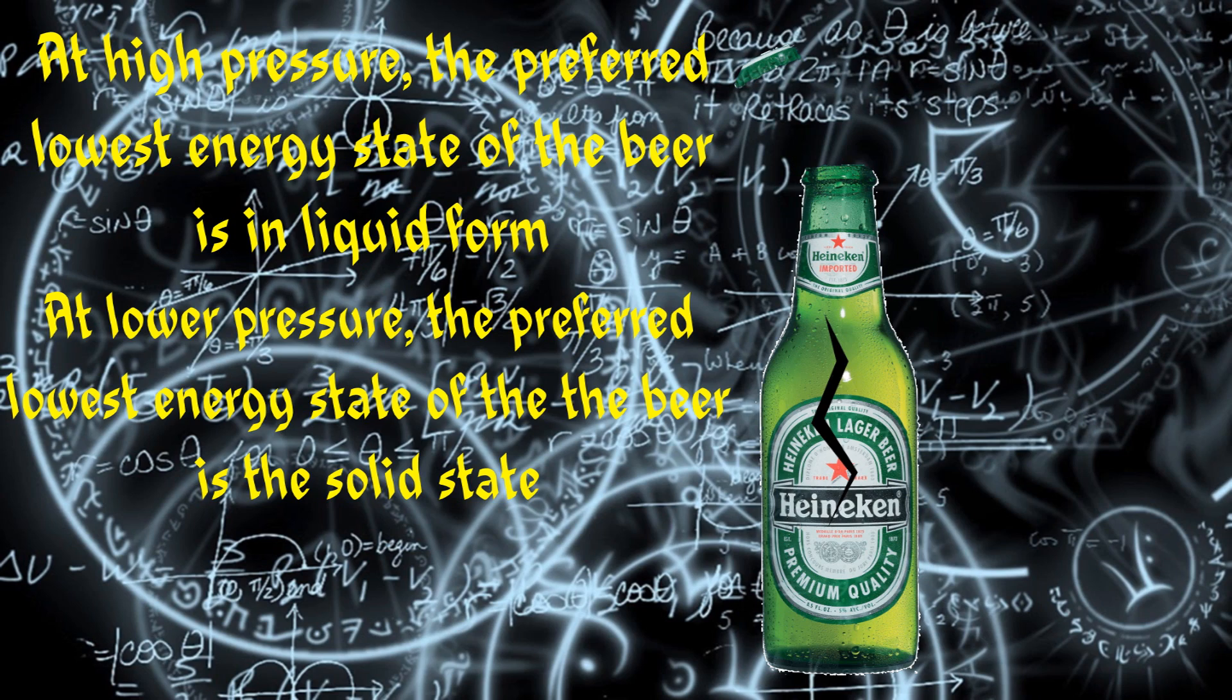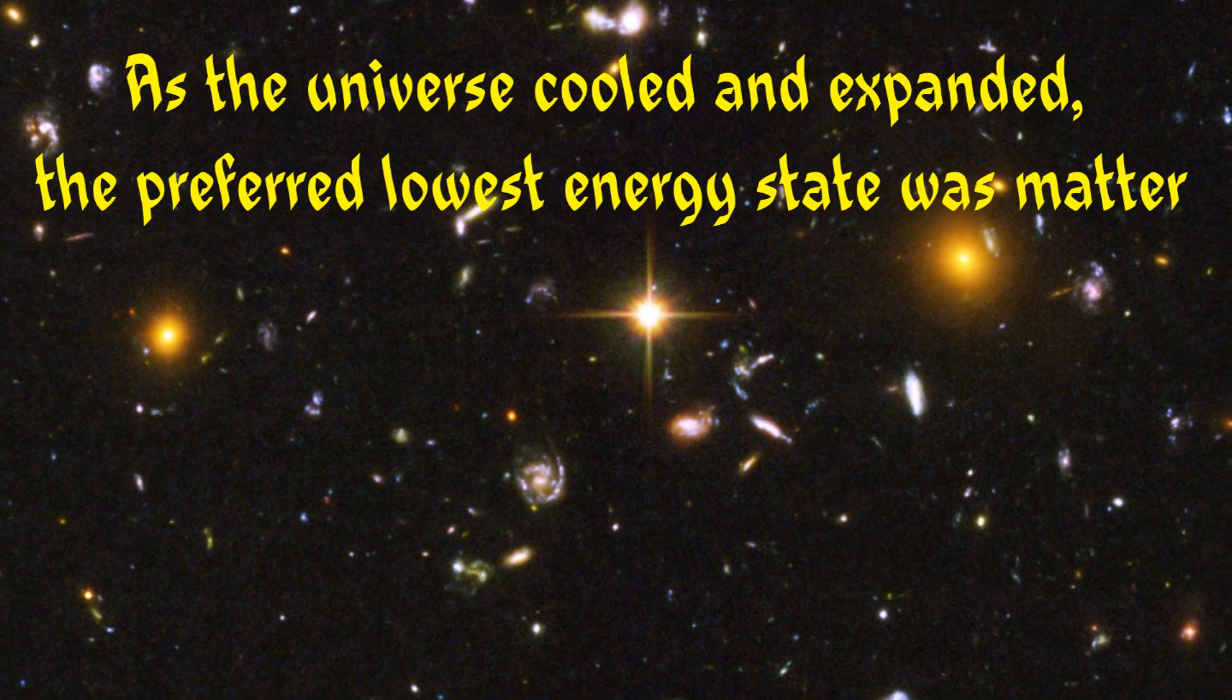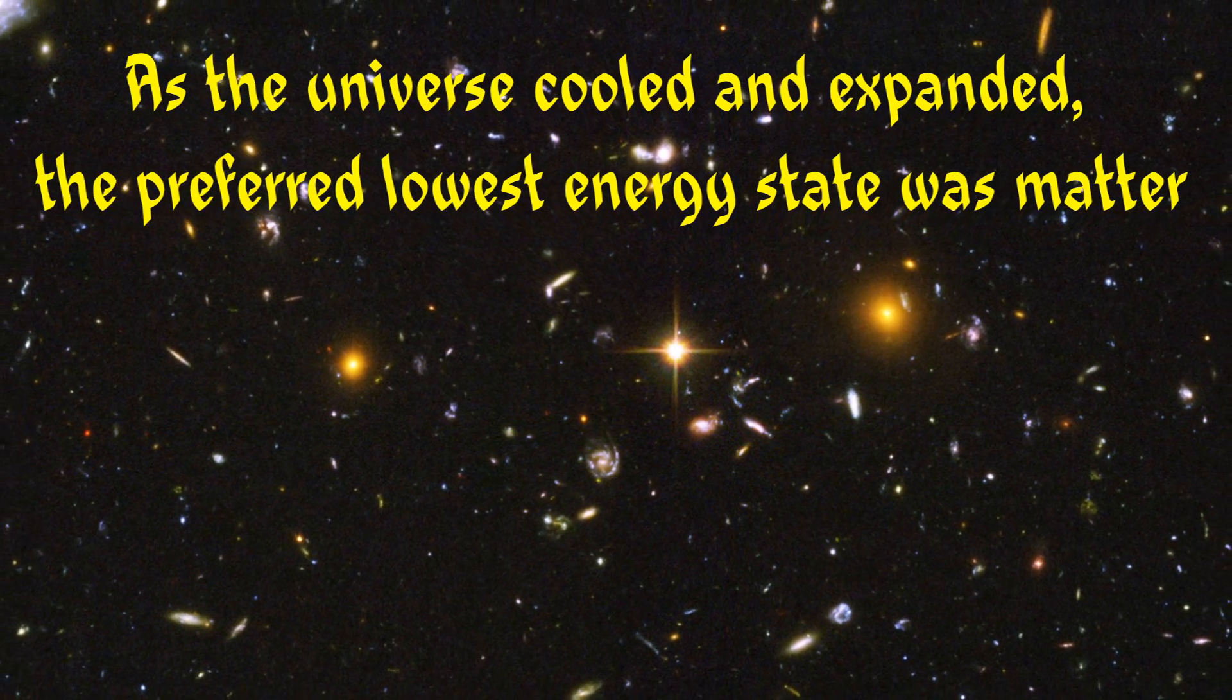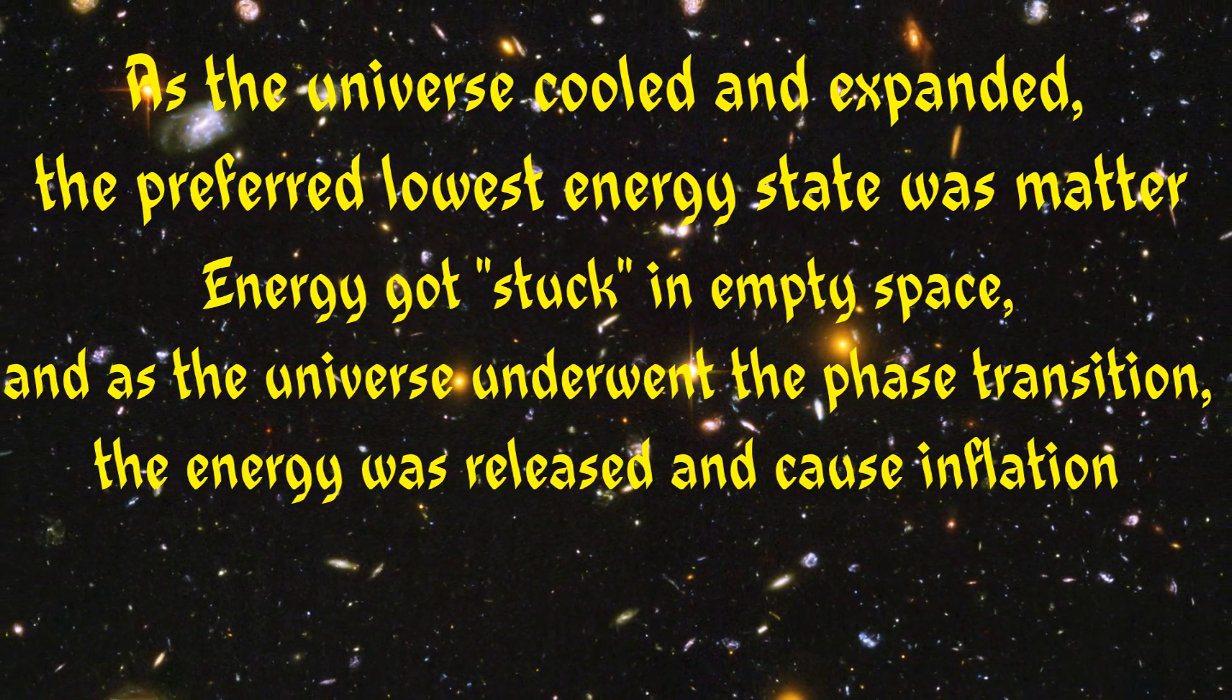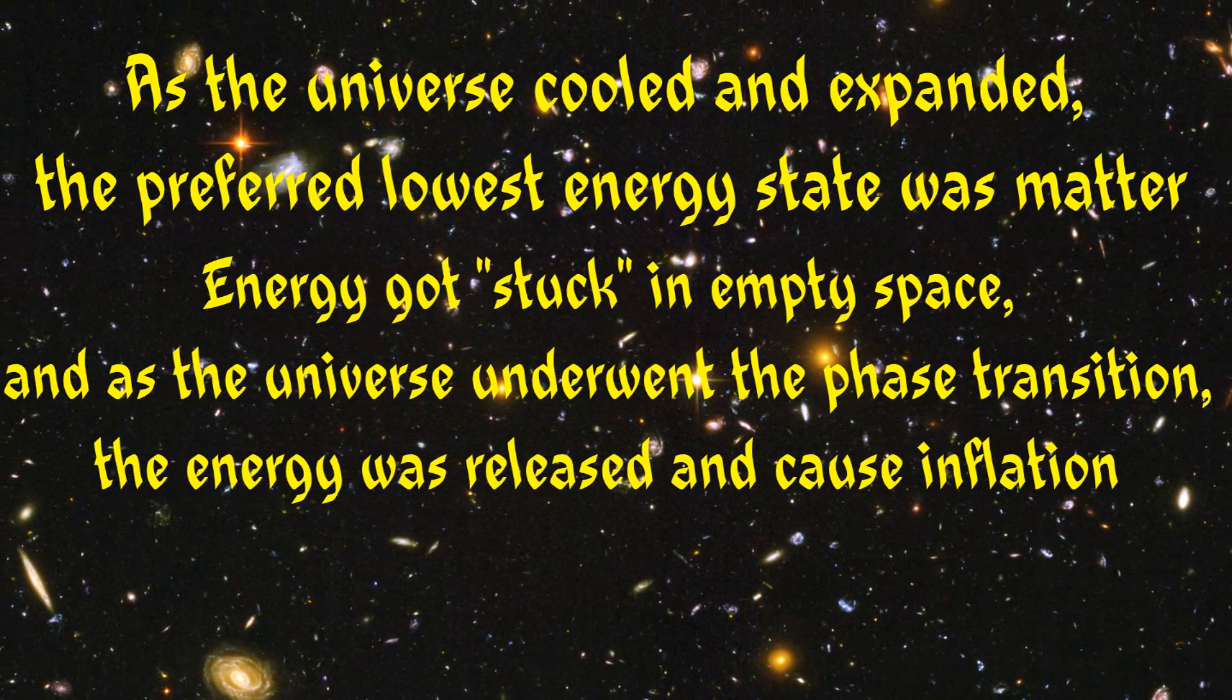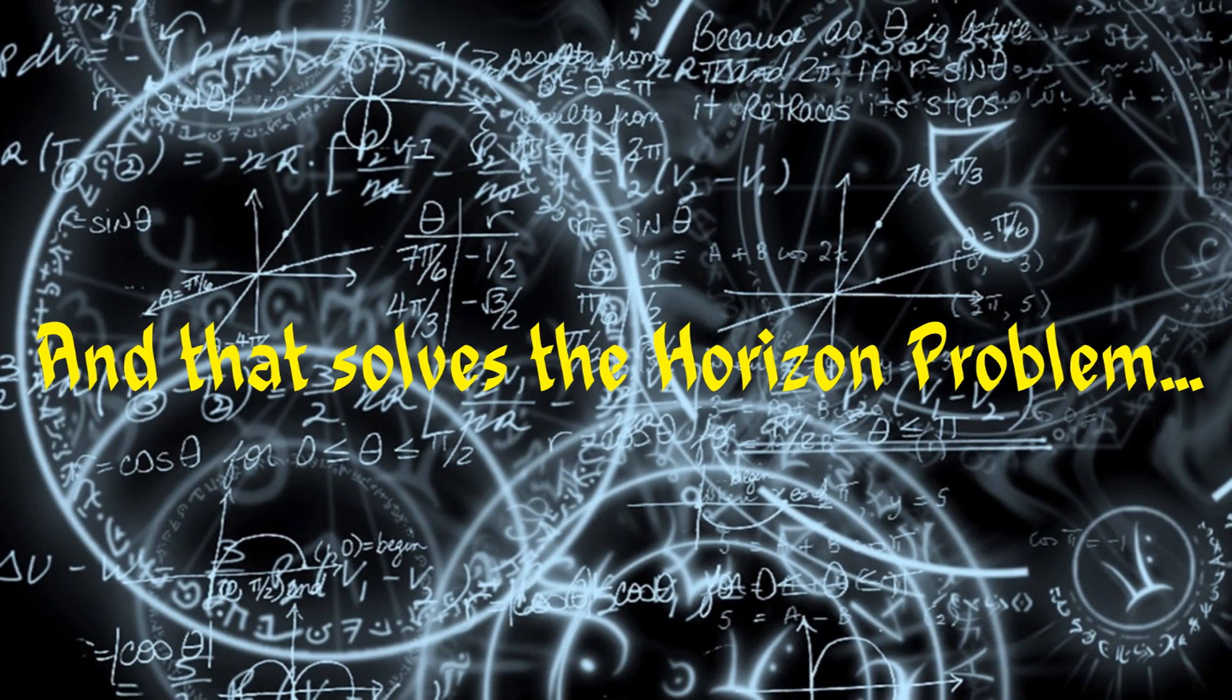When such energy is released, it is referred to as latent heat. Guth realized that as the universe itself cooled with the Big Bang expansion, the configuration of matter and radiation in the expanding universe might have gotten stuck in empty space. And as the universe cooled further, this configuration then suddenly underwent a phase transition to the energetically preferred ground state of matter and radiation. And that's the answer to the horizon problem. Keep searching. The universe is ours to explore.